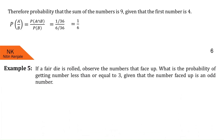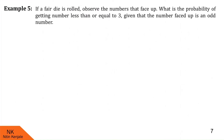Now let us go ahead to the next example. A fair die is rolled and we observe the number that faces up. We are asked to find the probability of getting a number less than or equal to 3 given that the face-up number is odd. The experiment is to roll a fair die once and observe the number that faces up.